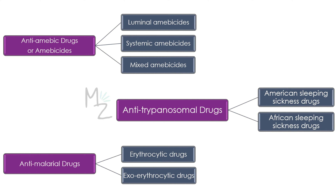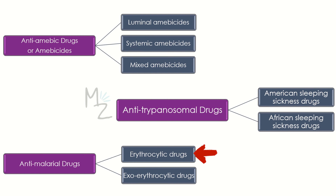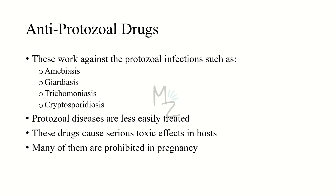Anti-trypanosomal drugs are classified based on the type of disease the trypanosoma causes: drugs for American sleeping sickness and drugs for African sleeping sickness. Anti-malarial drugs are classified into erythrocytic and extra-erythrocytic drugs, based on the location of the parasite in the human body.